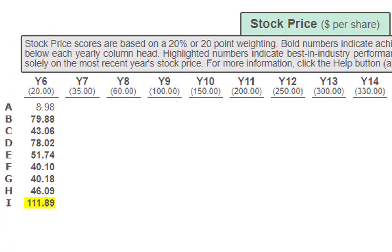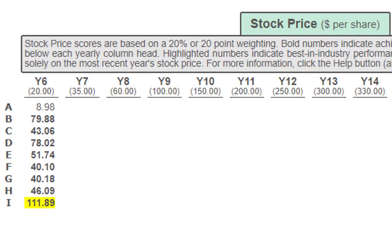Moving down to stock price — I sound like a broken record — again it's team I, they're at 111, a pretty good lead. The next team is company B at 79.88. With that said, everyone has met expectations except team A.